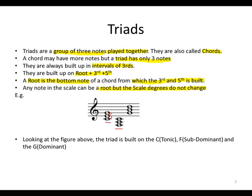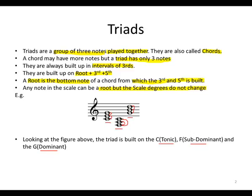A fifth from the root, or a third from the third, will be G. The next triad is built on F; a third above F will be A, and a fifth above F will be C. The next is built on G; a third above G is B, then a fifth above G is D.